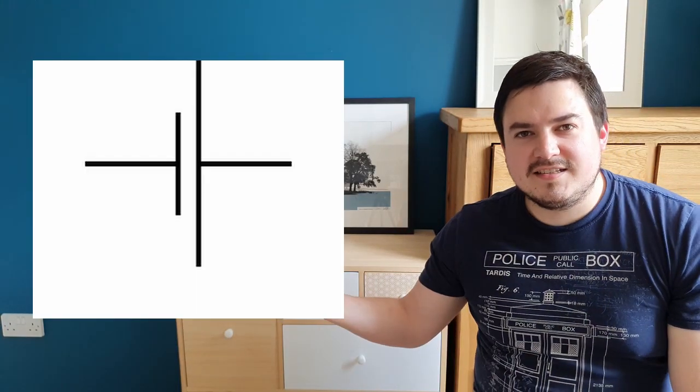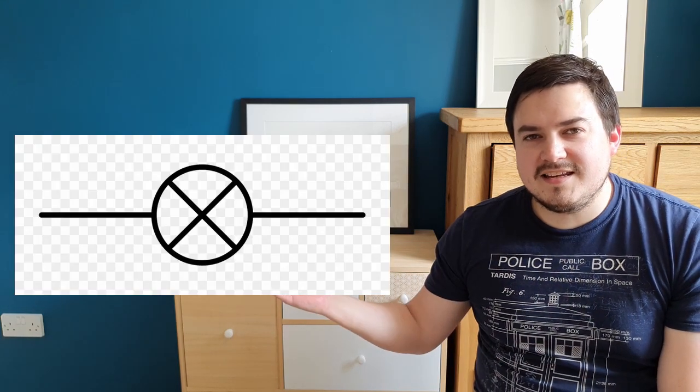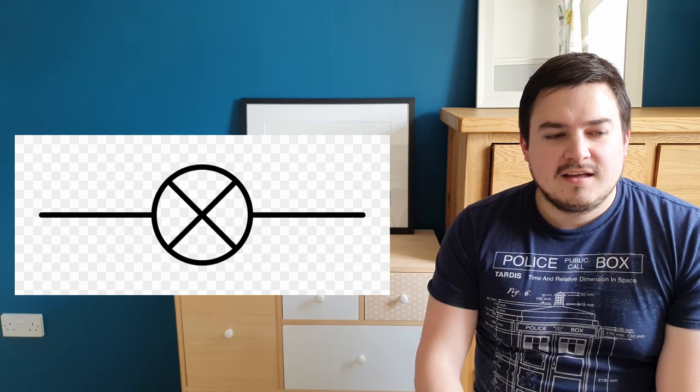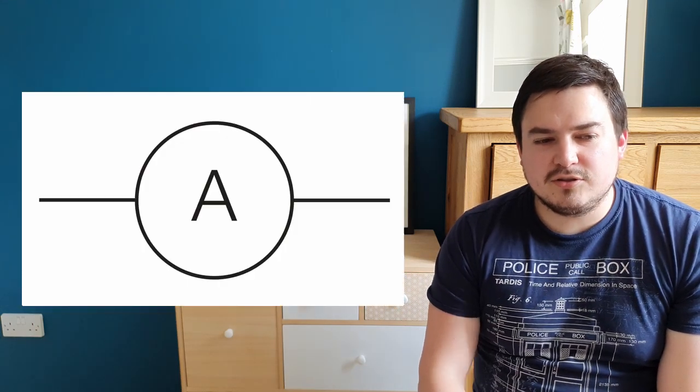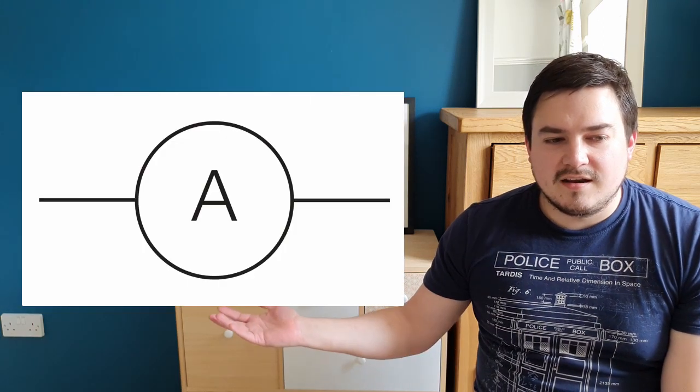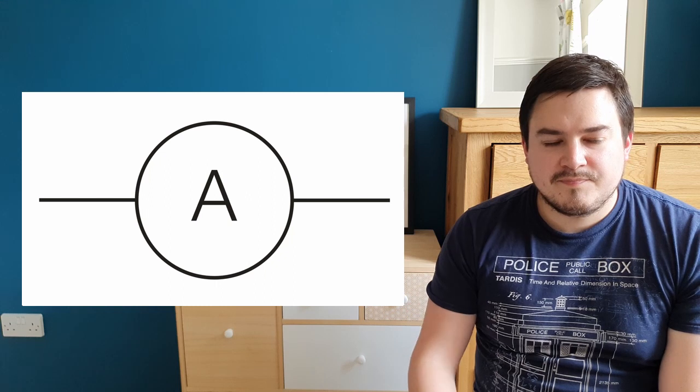Question one is to draw the circuit symbol for a cell, which should look something like this. Then draw the circuit symbol for a bulb, which should look something like this, and the circuit symbol for an ammeter, which should look something like this.